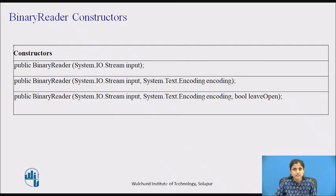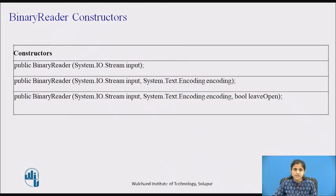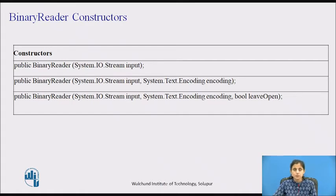There are three constructors of BinaryReader class. The first constructor takes one parameter — the input stream — and initializes a new instance based on that stream. The second constructor takes two parameters: the input stream and the character encoding to use. The third constructor takes those plus a boolean parameter used to optionally leave the stream open after the BinaryReader object is disposed; true to leave it open, otherwise false.